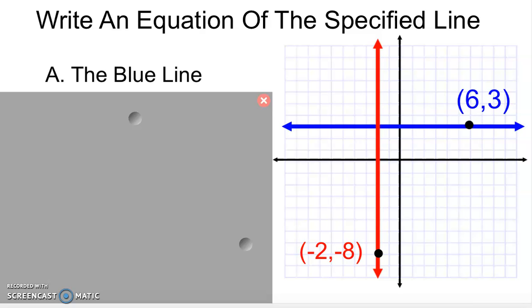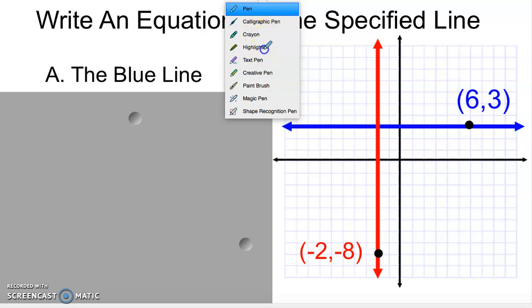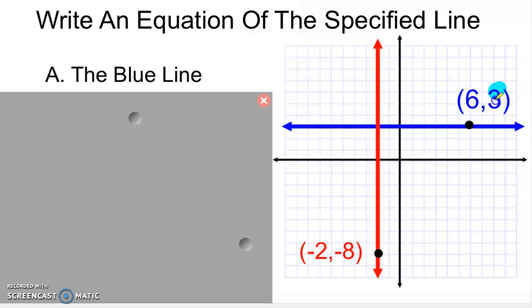Here I want to figure out the equation of the blue line. You'll notice it's going through the point 6, 3. As this line goes from left to right, the x changes — it keeps getting bigger or smaller — but the only thing that doesn't change is the y. So in this case, the equation of the blue line is going to be y equals 3.